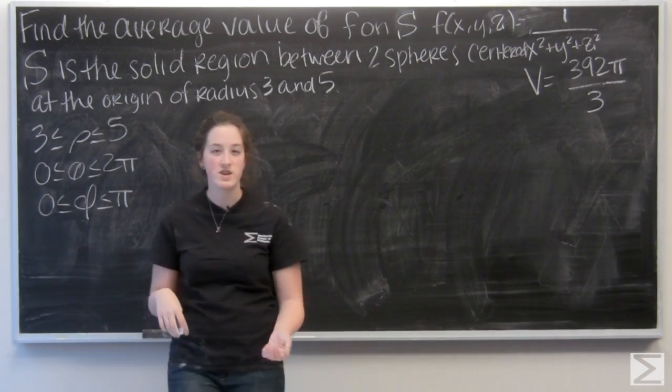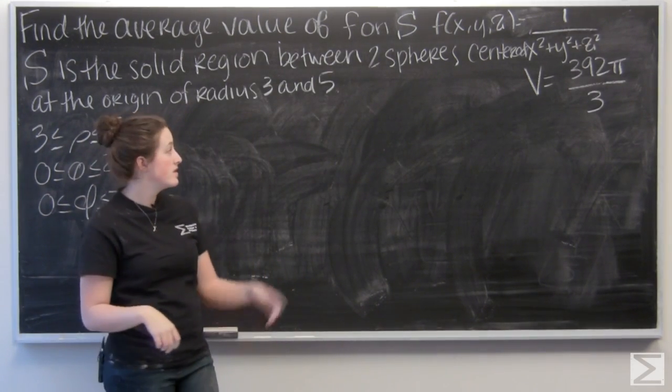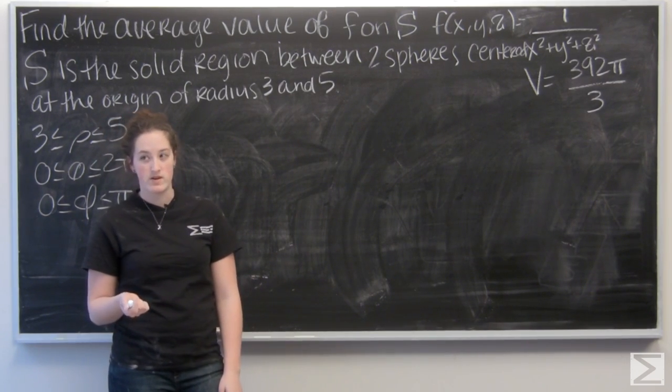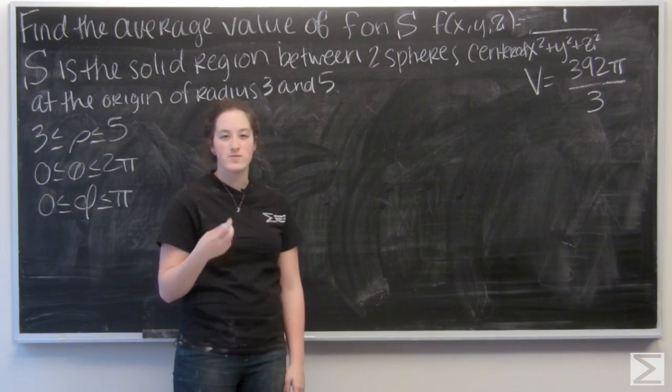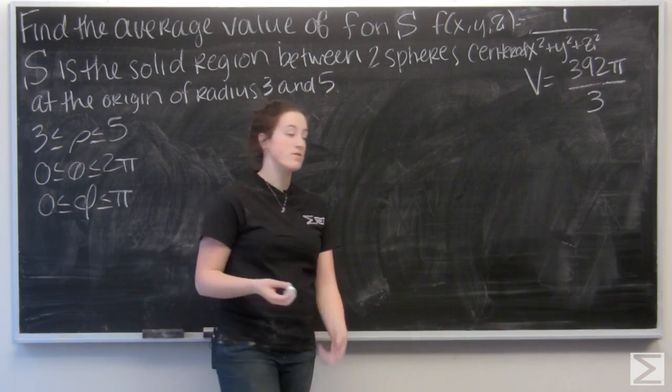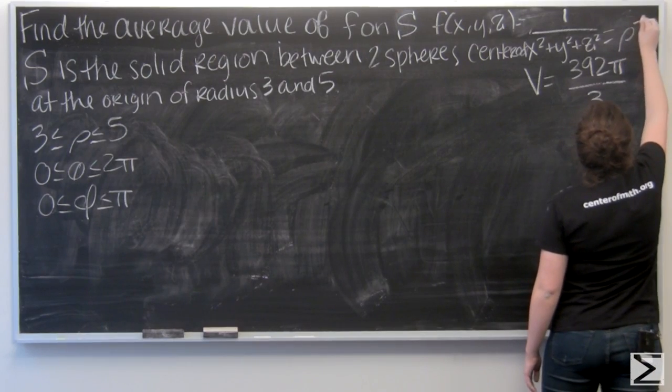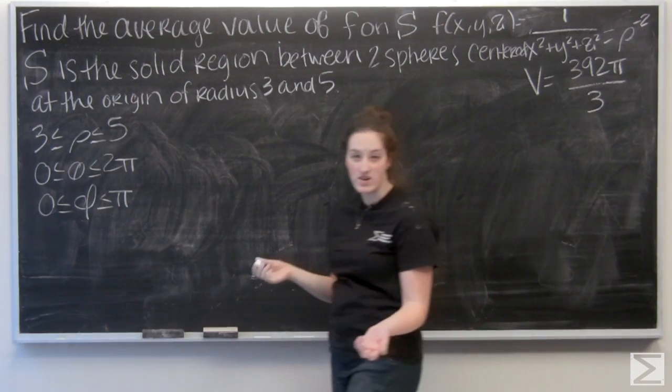So now the only thing left to do is change my function into spherical coordinates. So I have 1 over x squared plus y squared plus z squared. But we can remember that x squared plus y squared plus z squared is equal to rho squared. So I'm really looking at rho to the negative 2.